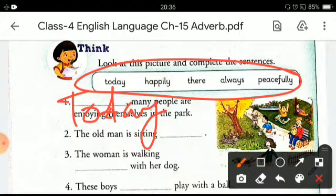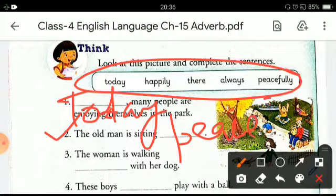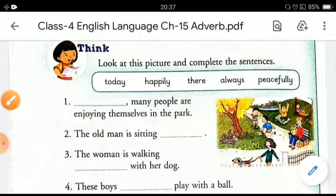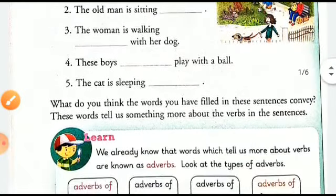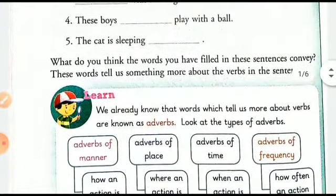The next sentence is 'The old man is sitting dash.' Let's choose the second word from the box. The second word is 'peacefully.' The old man is sitting peacefully. In this way, you can complete the rest of the fill in the blanks by choosing the correct word from the given clue box.